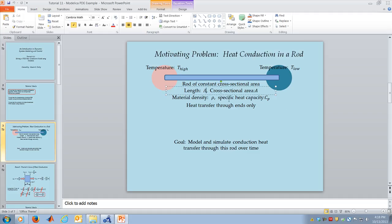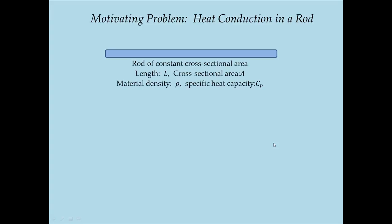The rod is made of a material with density rho (kg/m³) and specific heat capacity Cp (J/kg·K). We simplify by assuming heat is transferred through the ends of the rod only — no heat transfer between the rod and any environment along its length. Heat is transferred within the rod internally and only exits through the two ends.